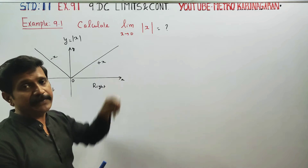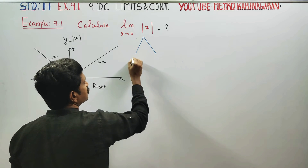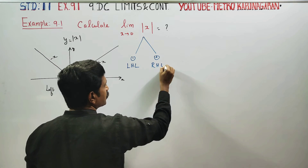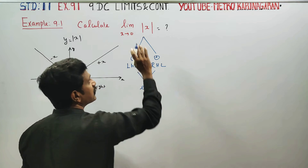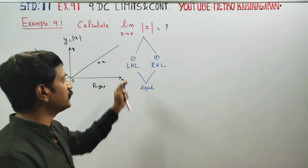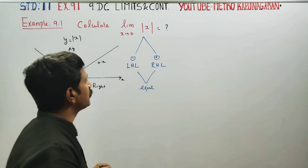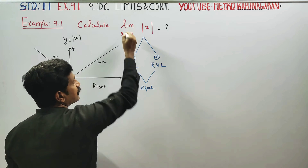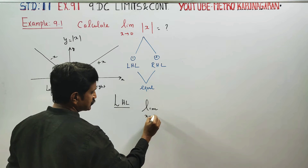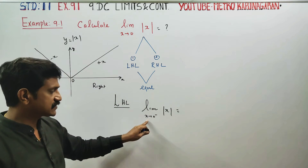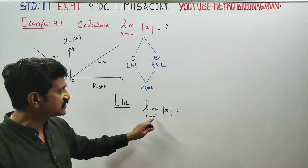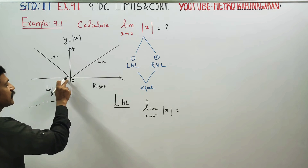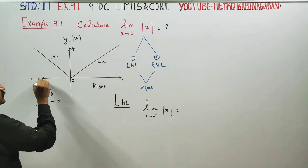Let's check the limit value. There are 2 ways to do it: first, the left-hand limit, and second, the right-hand limit. Limit as X turns to 0 minus, modulus of X — X turns to 0 from the left-hand side, which is the negative side direction.